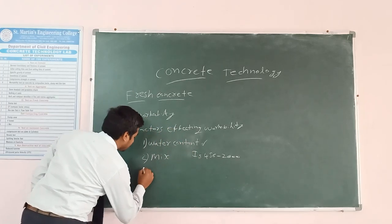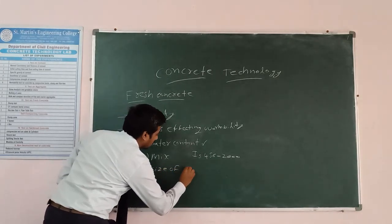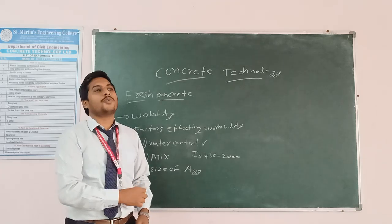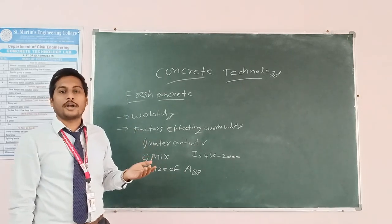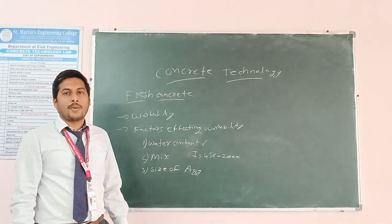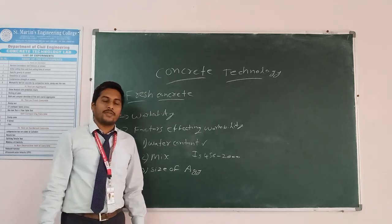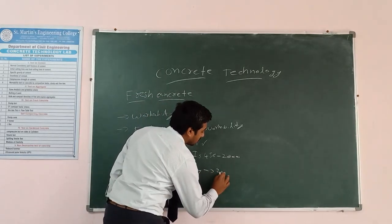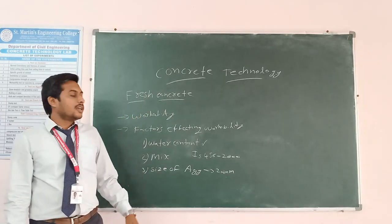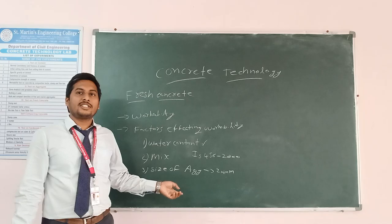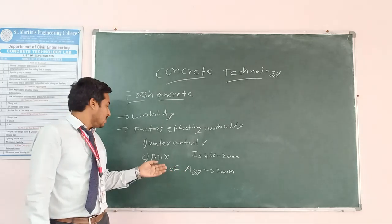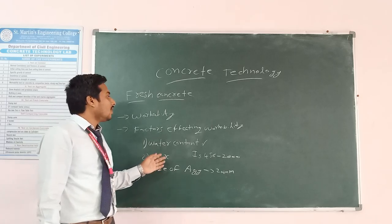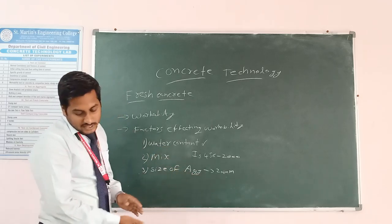The third factor is size of aggregate. We mainly use 20 mm aggregates for M20 grade and most other grades of concrete. If aggregates are not in proper size and shape, it affects the workability of concrete.